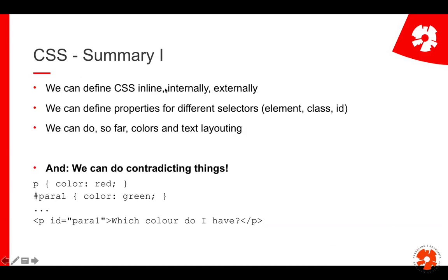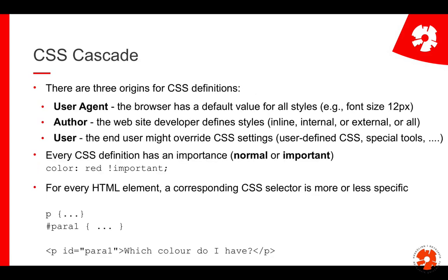So that's colors and basic tags. I've shown you how to define CSS inline, internally, and externally, and how to define properties for selectors. Now, when it gets interesting, is that we can do contradicting things. We could say color all paragraphs red, and then color all elements with ID para1 green. If an element is both a paragraph and has ID para1, we have a contradicting declaration — is it red or green? That's what we look at next, and this is where the cascading comes from — the C in CSS.